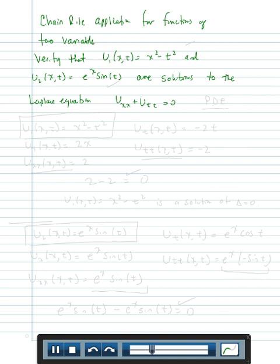This is an example of a second order linear partial differential equation. To verify that the first solution, x squared minus t squared, satisfies Laplace's equation, we have to calculate u sub x,x. The partial with respect to x means we hold the variable t as a constant, so the first partial with respect to x is 2x, and the second partial with respect to x is equal to 2.